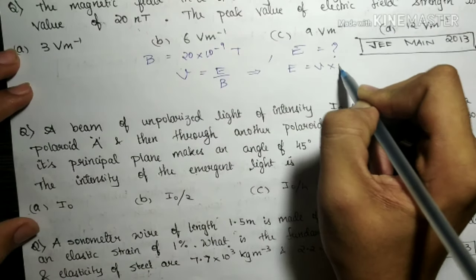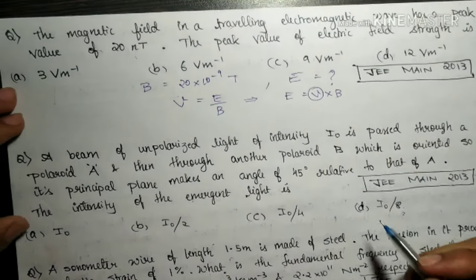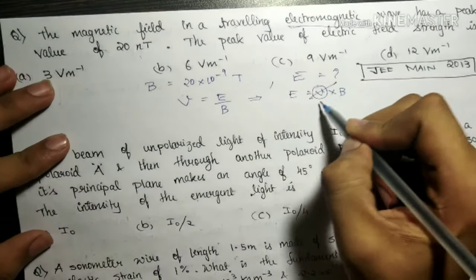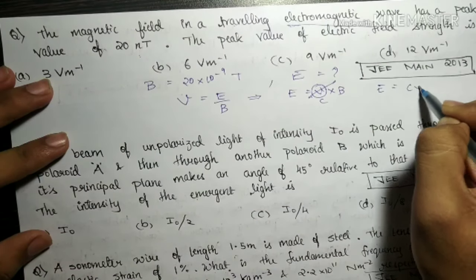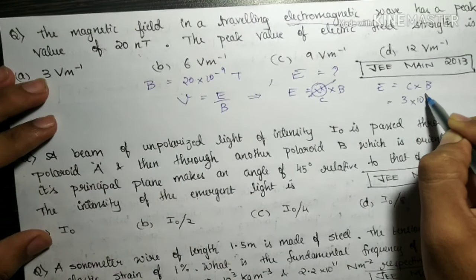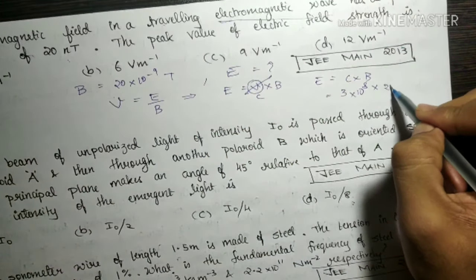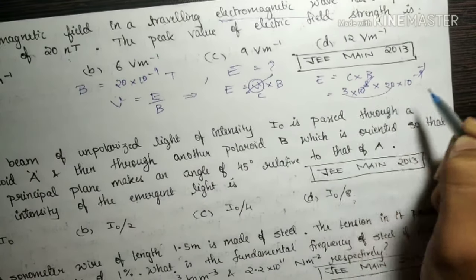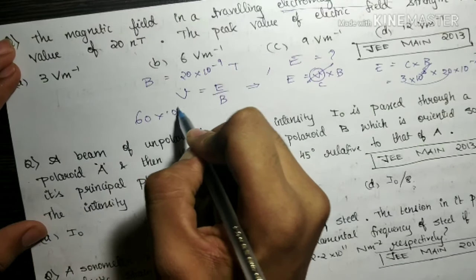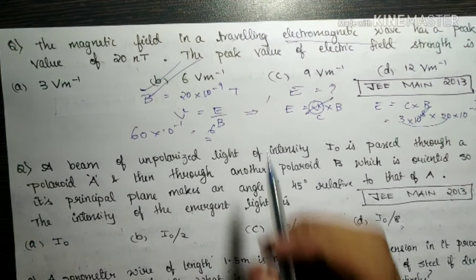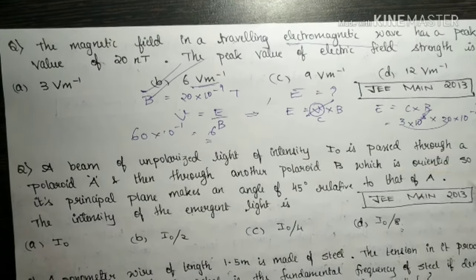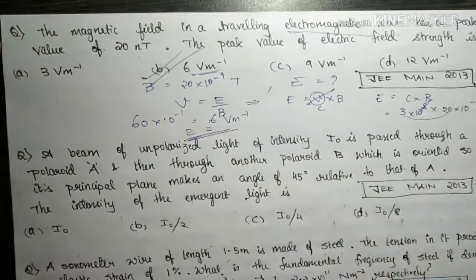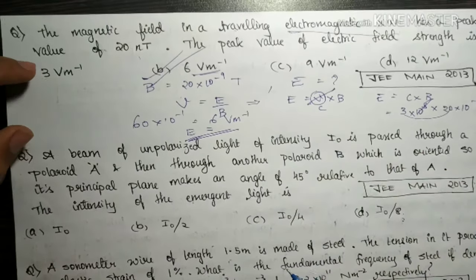So E = v×B, but we don't need to find the velocity separately because they say it is an electromagnetic wave — all electromagnetic waves travel with the speed of light. So v is replaced by c, giving E = c×B = 3×10⁸ × 20×10⁻⁹ = 60×10⁻¹ = 6 volts per meter. So the peak electric field is 6 V/m.